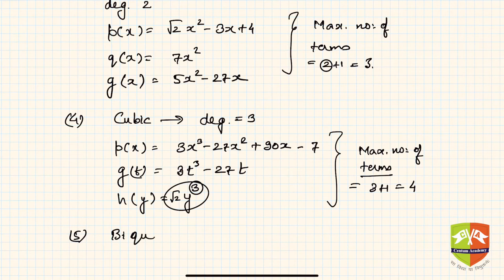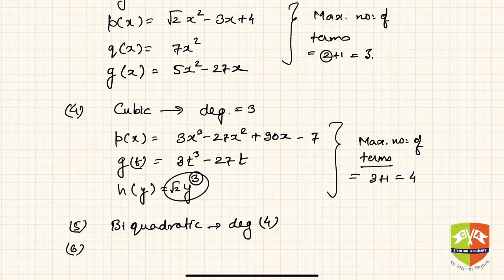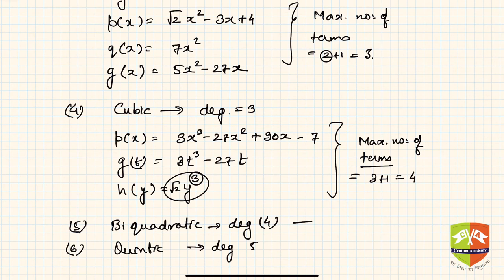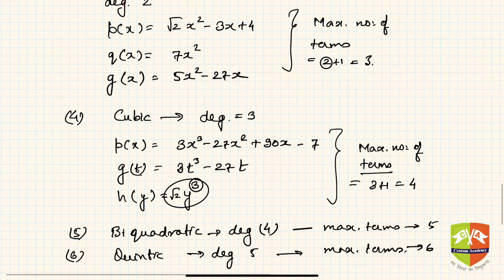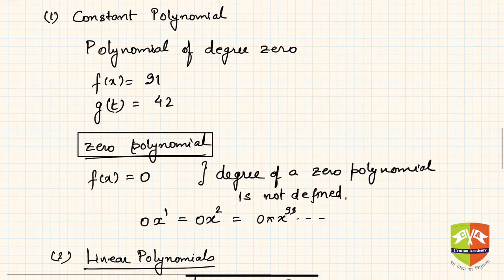The next one is the biquadratic polynomial, where the degree is 4 — so the maximum number of terms is 5. After that comes quintic, where the degree is 5, giving a maximum number of terms of 6.